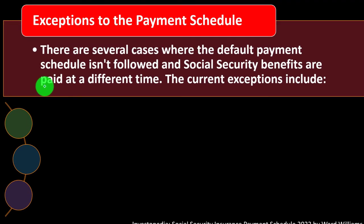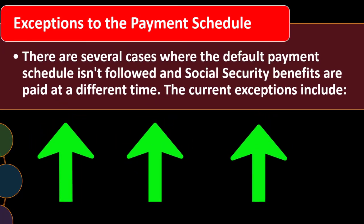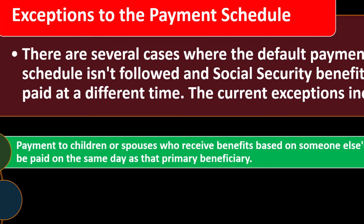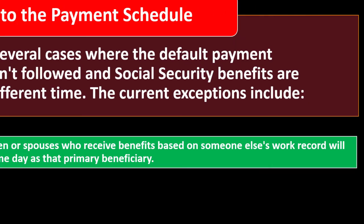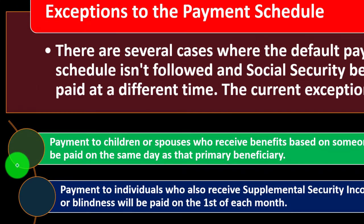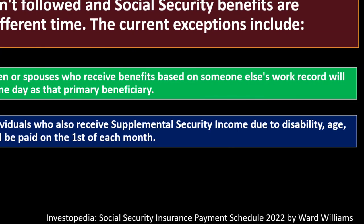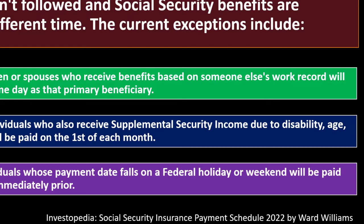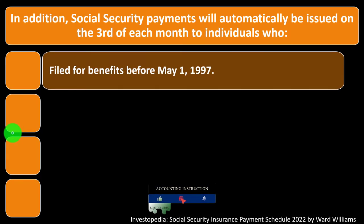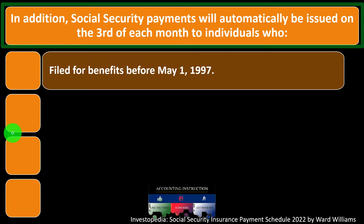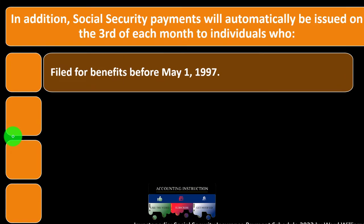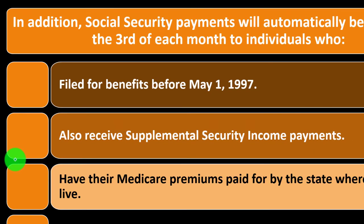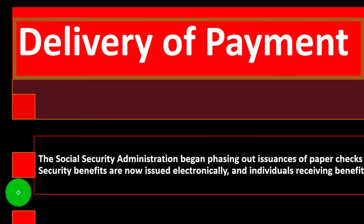There are several exceptions where the default payment schedule doesn't apply. Payment to children or spouses who receive benefits based on someone else's work record will be paid on the same day as that primary beneficiary. Payment to individuals who also receive SSI due to disability, age, or blindness will be paid on the first of each month. Payment to individuals whose date falls on a federal holiday or weekend will be paid on the weekday immediately prior. Additionally, those who filed before May 1st, 1997, also receive SSI, have Medicare premiums paid by the state, or live in a foreign country receive payments on the third of each month.